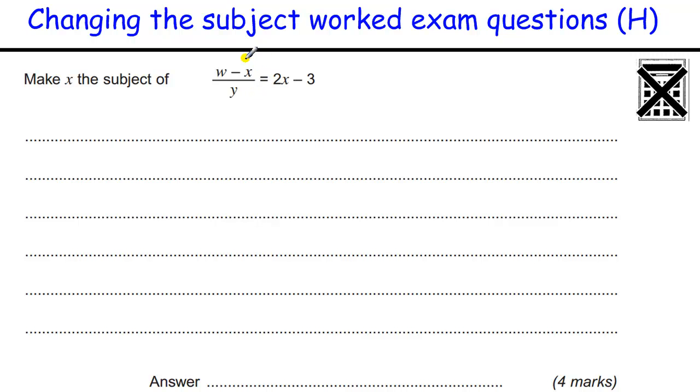OK, making X the subject again, it's in two places, more complications with the fraction bit here. Usually when we see a fraction, we multiply by it, multiply by the Y, multiply this by Y to get rid of the fraction. So W minus X, the Y is cancelled there. I'm not going to put a bracket in here, I'm going to multiply each bit by Y, because I want to get the X's on its own, so Y times 2X is 2XY minus 3 times Y.